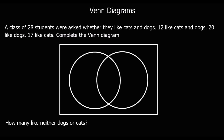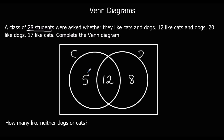Sometimes we're going to be asked to fill in our own Venn diagram. In a class of 28 students, they like cats or dogs or both. 12 like cats and dogs — that's the middle bit. 20 like dogs, so we've already got 12 in the dogs circle, so we need 8 more. 17 like cats; we've already got 12, so we need 5 more. We've got 25 people so far, there's 28 in total, so 3 more. How many like neither dogs or cats? That's 3.